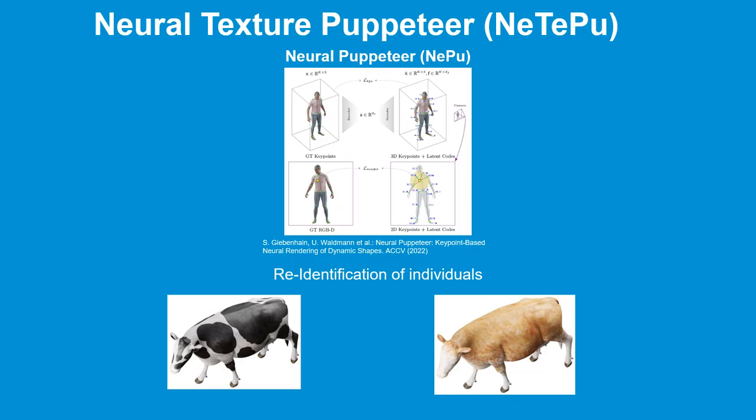With that in mind, we developed Neural Texture Puppeteer. As a basis, we make use of Neural Puppeteer, a flexible and efficient neural rendering pipeline. Our key idea is to disentangle geometry and texture.